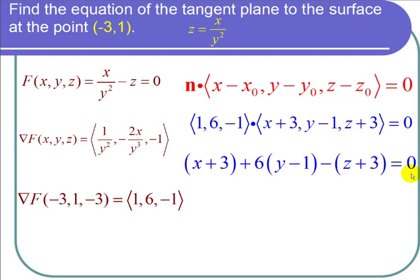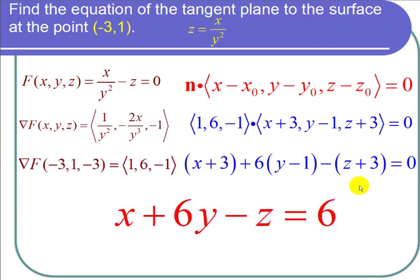I can simplify this. This is x plus 6y minus z. I have 3 minus 6 is negative 3 minus another 3 is negative 6. I can bring that negative 6 over by adding 6 to both sides. And I get my final answer that the equation of the tangent plane to the surface at the point is x plus 6y minus z equals 6.